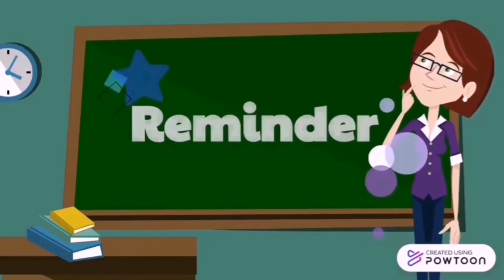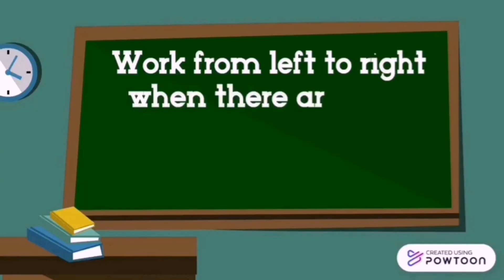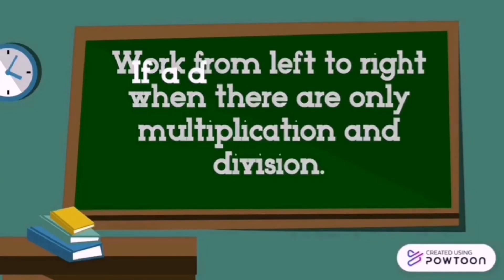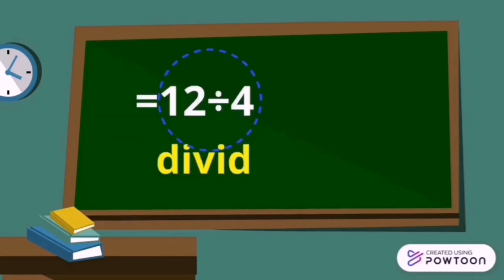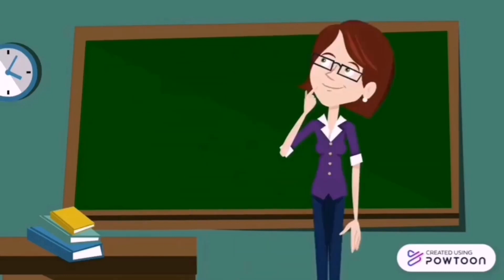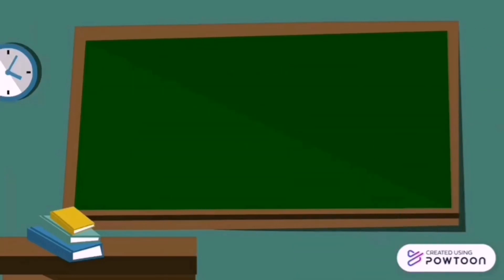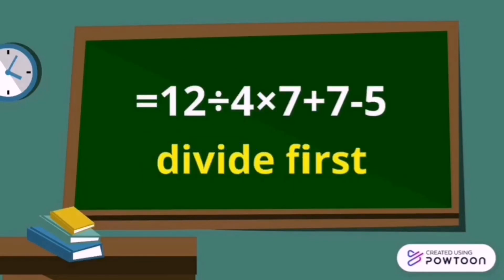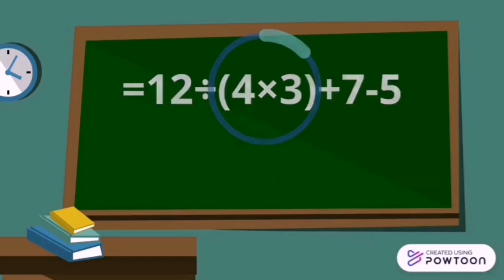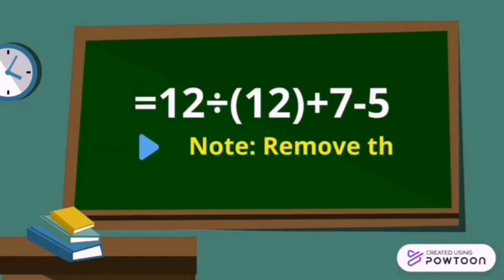Reminder: Work from left to right when there are only multiplication and division. If a division comes before multiplication in an expression, do that first. Similarly, if a multiplication comes first, do it first. The same is true for addition and subtraction — perform whichever operation comes first in the expression.